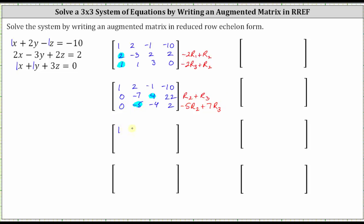Row one remains the same. Replacing row two with row two plus row three: zero plus zero is zero; negative seven plus negative five is negative twelve; four plus negative four is zero; twenty-two plus two is twenty-four. Replacing row three with negative five times row two plus seven times row three: negative five times zero plus seven times zero is zero; negative five times negative seven plus seven times negative five is thirty-five plus negative thirty-five or zero; negative five times four plus seven times negative four is negative twenty plus negative twenty-eight or negative forty-eight; negative five times twenty-two plus seven times two is negative one-ten plus fourteen, which is negative ninety-six.